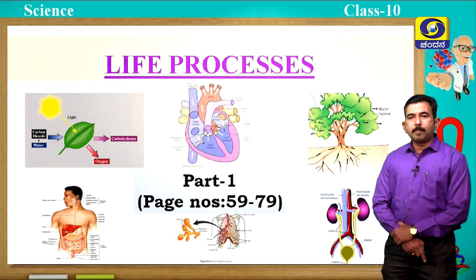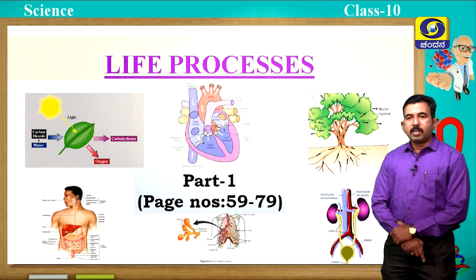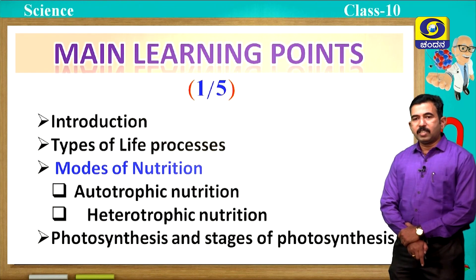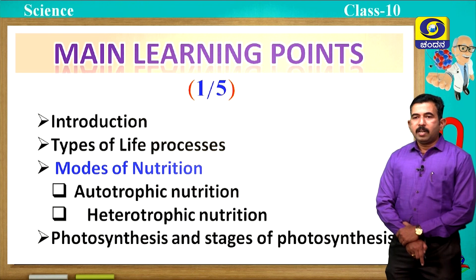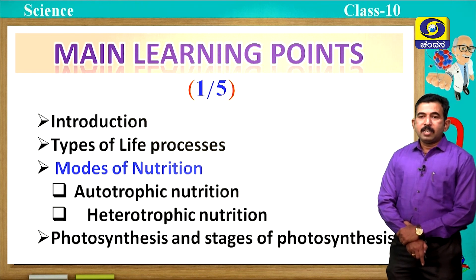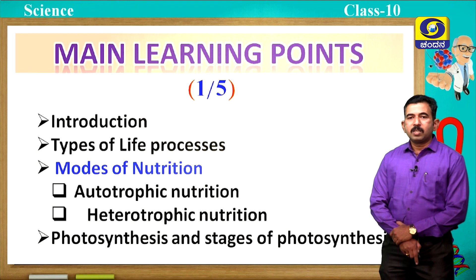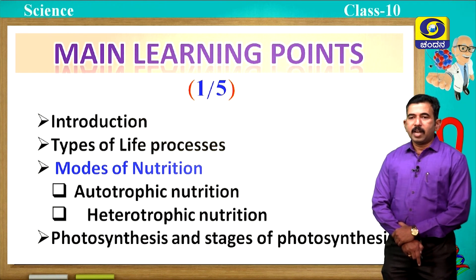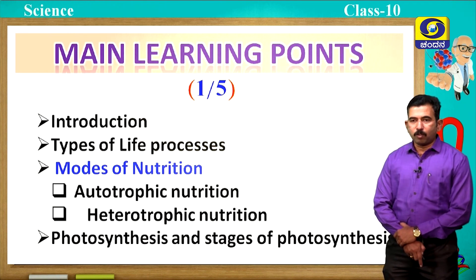Students, this chapter we are going to study in five sessions. The main learning points we are going to study in the first session are: introduction to the life processes, types of life processes, modes of nutrition — in that we are going to discuss about autotrophic and heterotrophic nutrition — photosynthesis and stages of photosynthesis.